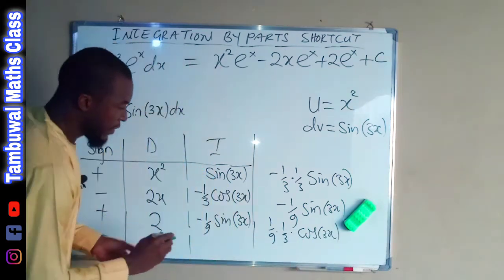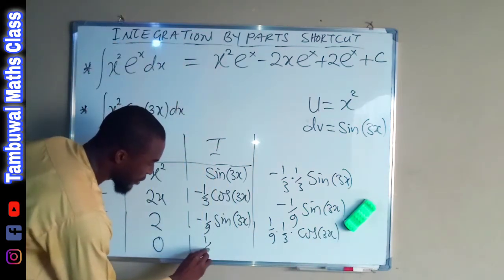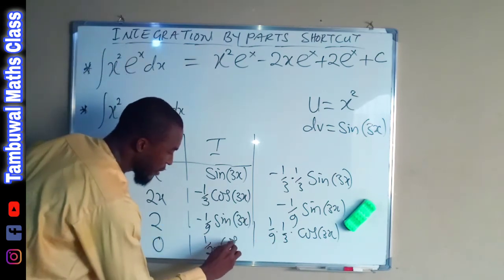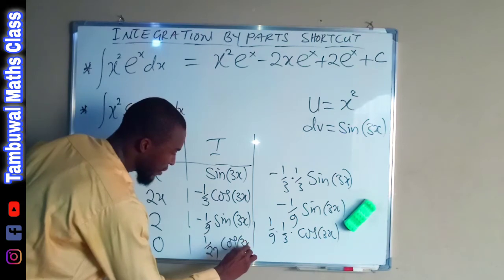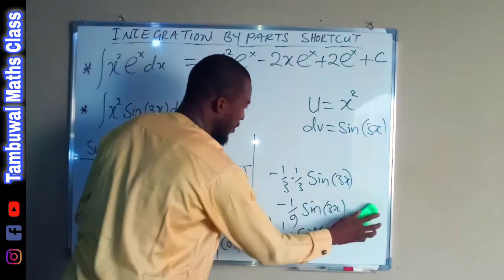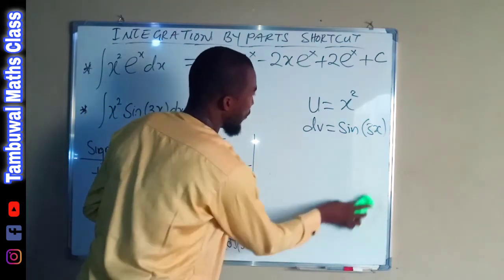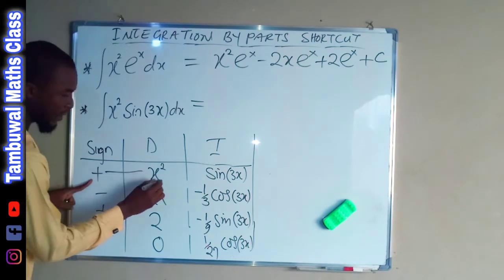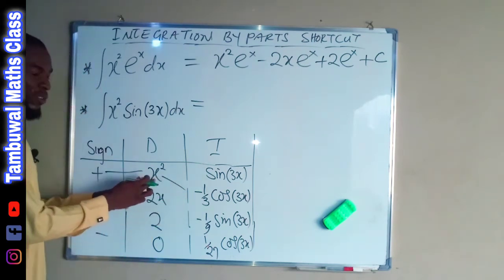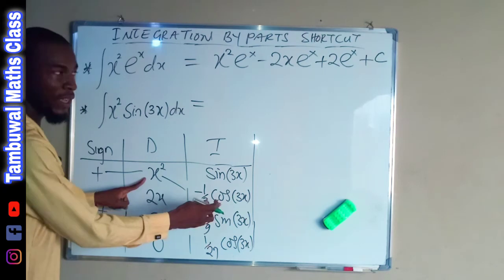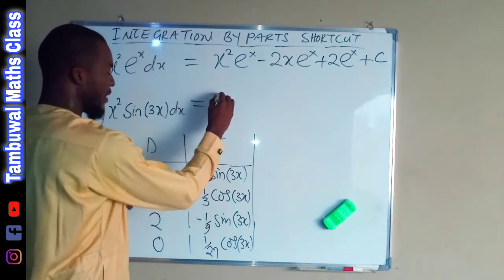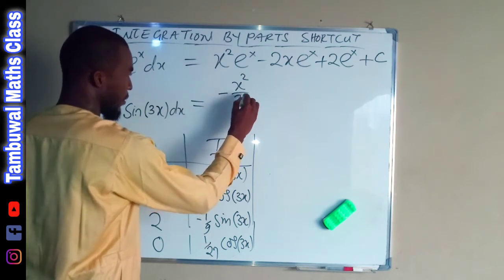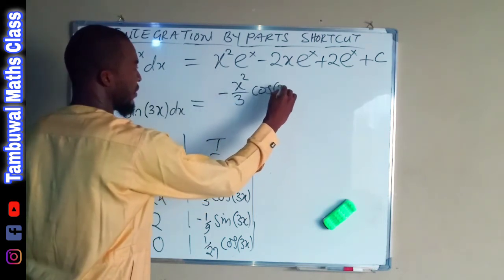This gives positive 1 over 27 cos 3x, since 9 times 3 is 27. We have now finished the integration column. So the first term is positive x squared times negative 1 over 3, which gives negative x squared over 3 times cos 3x.